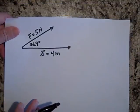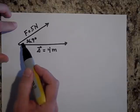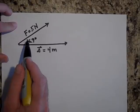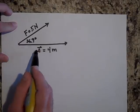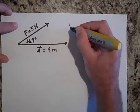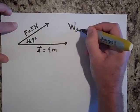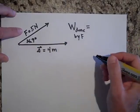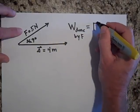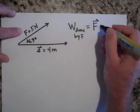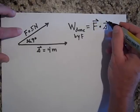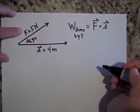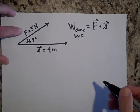Imagine I have a force doing work on an object — the force is five newtons and it displaces the object four meters. The only part of the force that matters is the force in the direction of s. So the work done by F equals the dot product F dot s, and notice that gives you a scalar quantity — there's no vector arrow over the result.